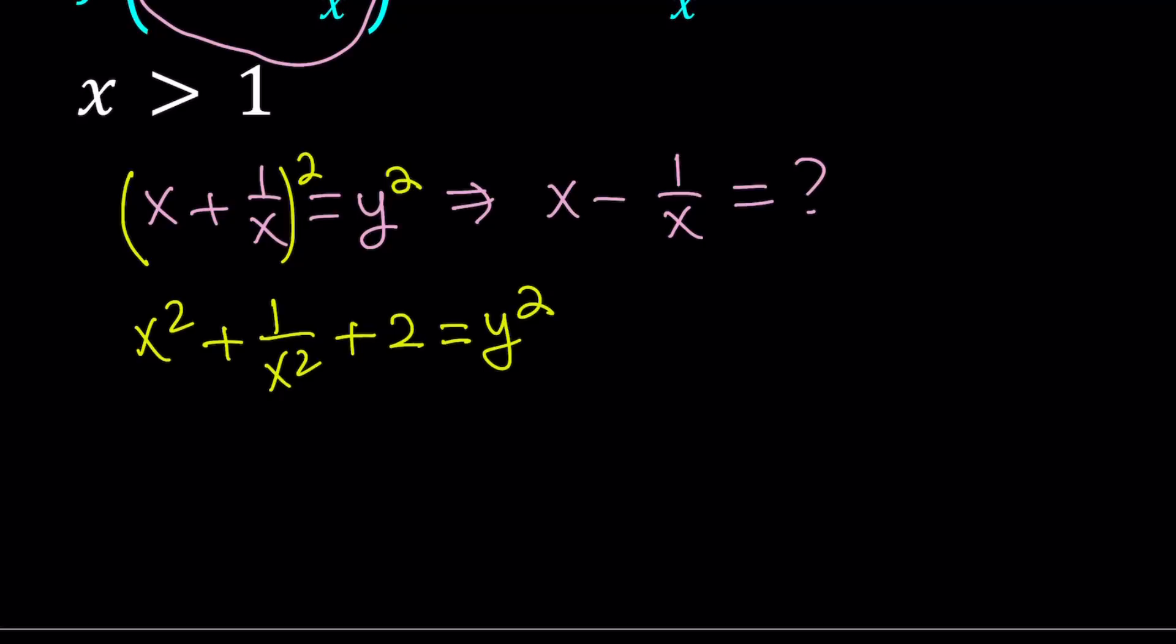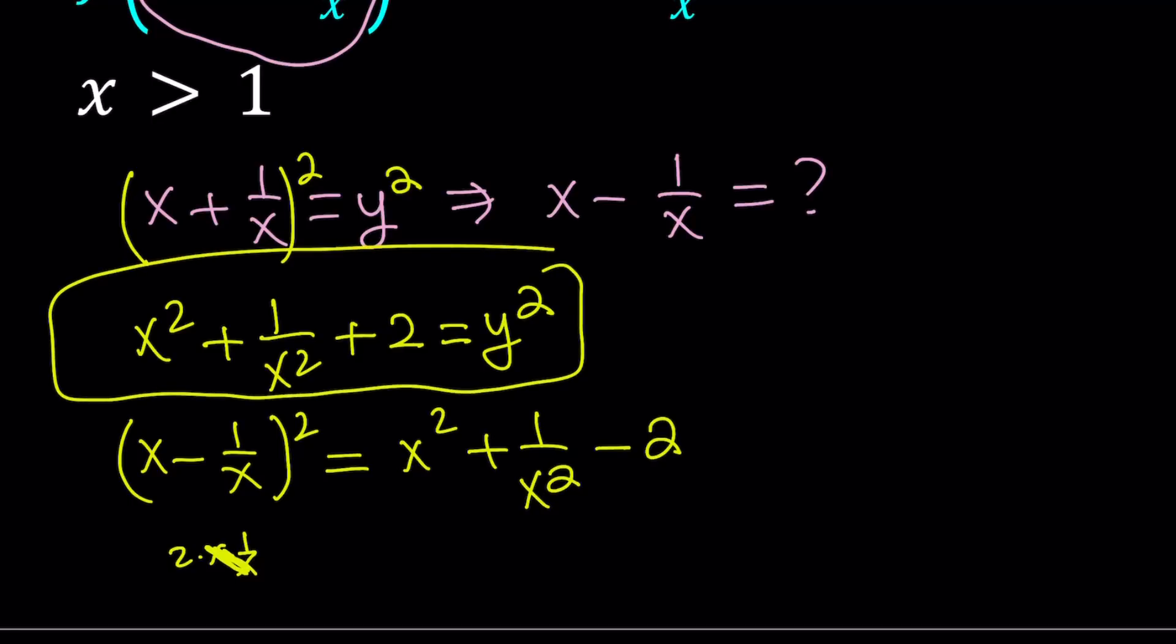We want to do the same thing for x minus 1 over x. Let's go ahead and square x minus 1 over x and we get something very similar. That's going to be x squared plus 1 over x squared minus 2ab. Again, it's 2 times x times 1 over x, but it just turns into a 2 there. So we have two equations basically. We know that this equals y squared, and we also know that x minus 1 over x squared equals that. We're going to put these two together.